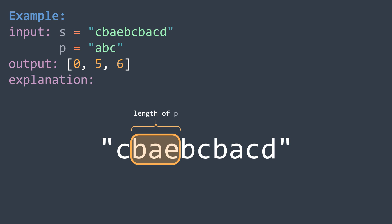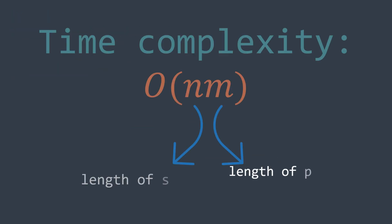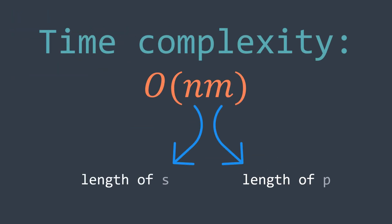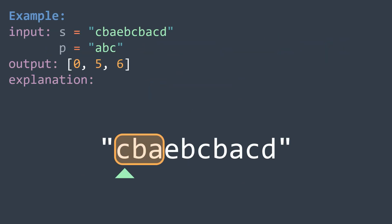To check if two strings are anagrams, we have to traverse them to count occurrences of each letter, then compare maps. If we keep repeating this at each index of s, we end up with a time complexity of O(n × m), where n is the length of s and m is the length of p, because at each index we traverse the substring from index i to index i plus the length of p.